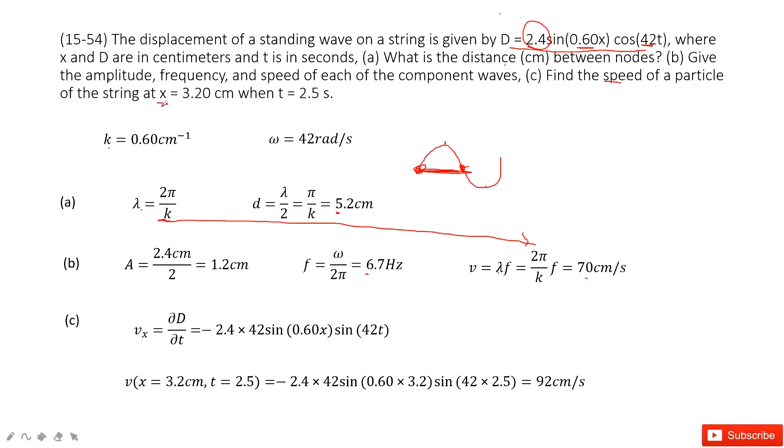Because we need to find it at this position x, we can see partial derivation ∂D/∂t is the velocity at the one point x. So then we input the known quantities x equal to 3.2 cm, t is 2.5 seconds. Get final answer there.